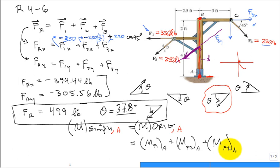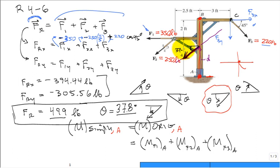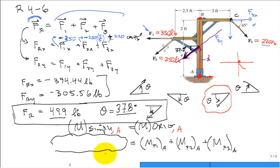This is consistent with what we did before: just as the single resultant force equals the sum of all forces, the single resultant force must also create the same moment about point A. The resultant has magnitude 499 pounds and orientation 37.8 degrees from the negative x-axis. The unknown d must appear in the moment equation on the left-hand side — that's what we're solving for.